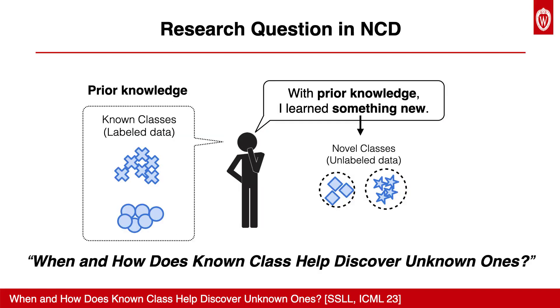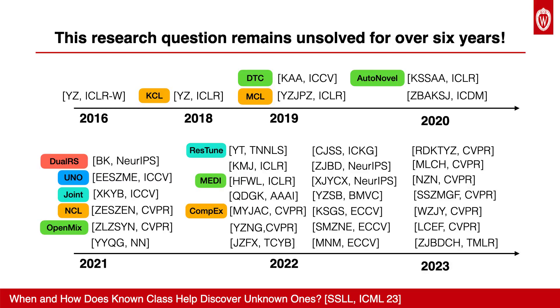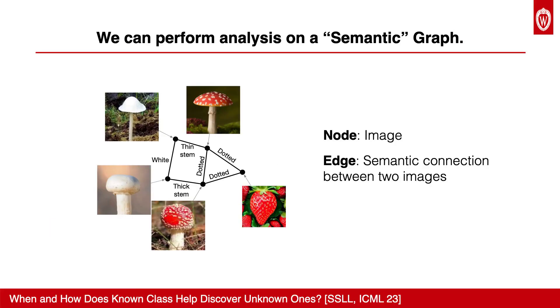The research question is: when and how does the known class help discover novel classes? In recent years, despite empirical success, there is limited theoretical understanding and formalization for the novel class discovery problem. Our work fills in this critical blank.